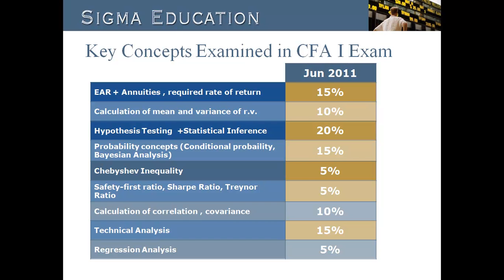There is one main addition and deletion in sub-sessions of learning objectives. Additional material covers calculation of covariance and correlation. Deletions include undescriptive statistics and interpretation of central tendency. Changes in the curriculum regarding common probability distributions are the most significant. In the new curriculum, candidates are expected to explain measures of sample skewness and kurtosis, explain Monte Carlo simulation and describe its major applications and limitations, and compare Monte Carlo simulation and historical simulation.